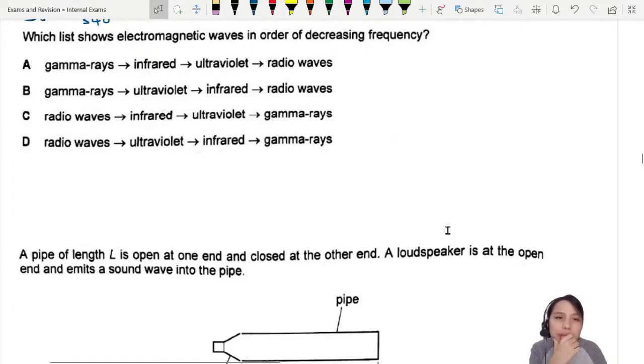Which list shows electromagnetic waves in order of decreasing frequency? Decreasing frequency, okay.